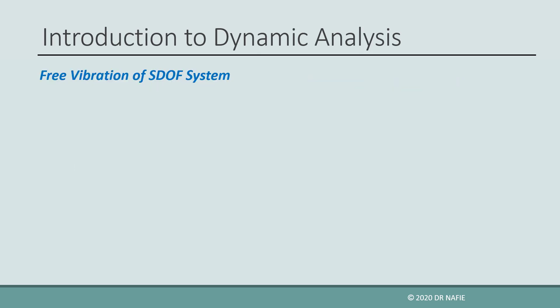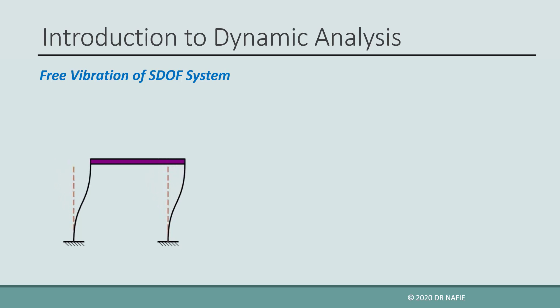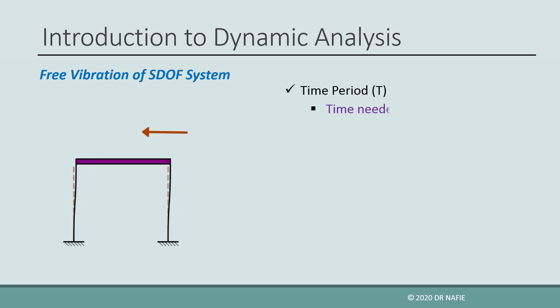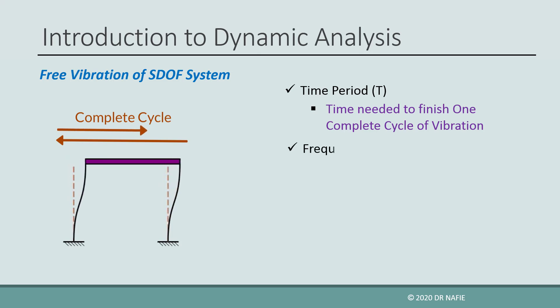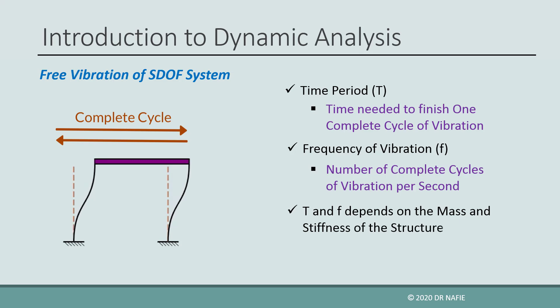Let us first study the free vibration of a single degree of freedom structure. When a horizontal force is applied on the shown one-story shear frame, the frame will sway in the horizontal direction. If the force is suddenly removed, the frame will start to vibrate in a free mode back and forth around its undeflected position. The time needed for the frame to complete one cycle of vibration is called the natural period of vibration, and the number of cycles completed in one second is called the natural frequency. The natural period and frequency are always constant for the frame and depend only on the mass and stiffness of the frame.